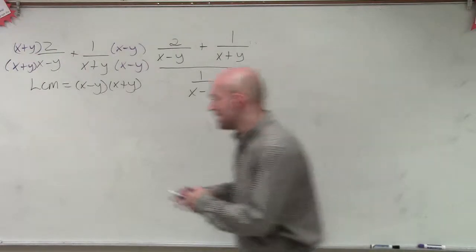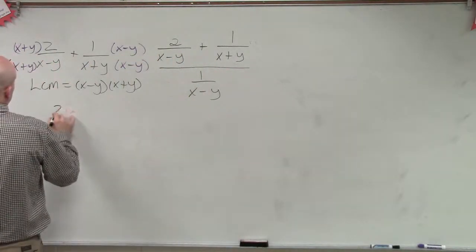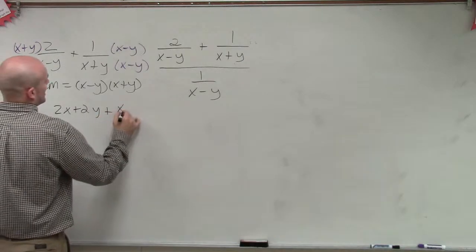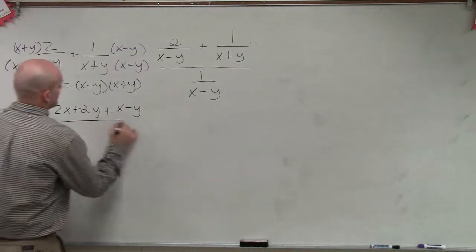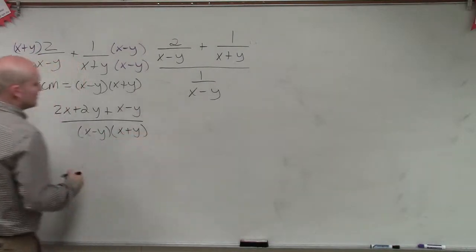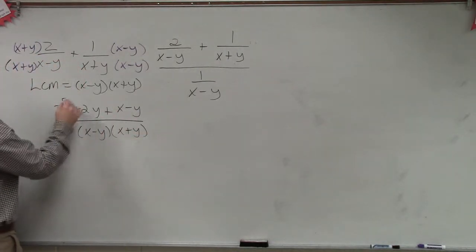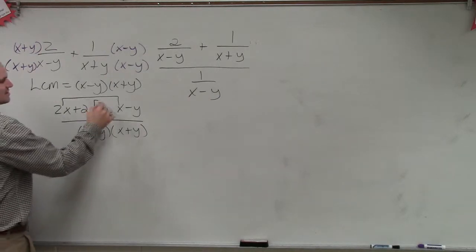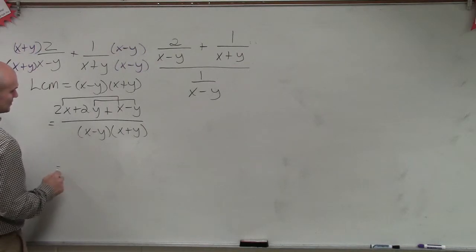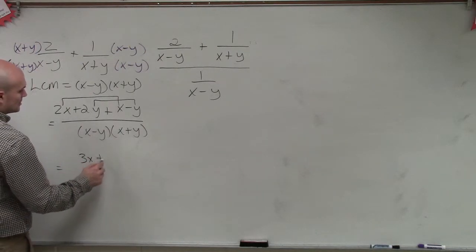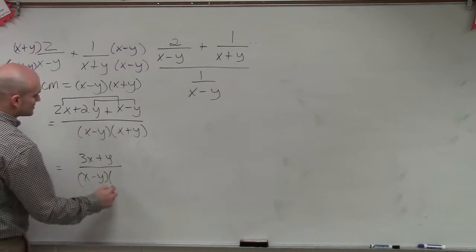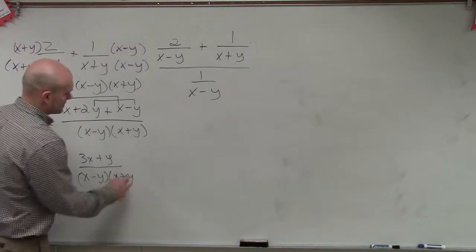Then I apply the distributive property, and I get this solution. 2x plus 2y plus x minus y all over x minus y times x plus y. Then I can combine my like terms. 2x plus x is 3x, and 2y minus y is y. So my final answer is going to equal 3x plus y over x minus y times x plus y.